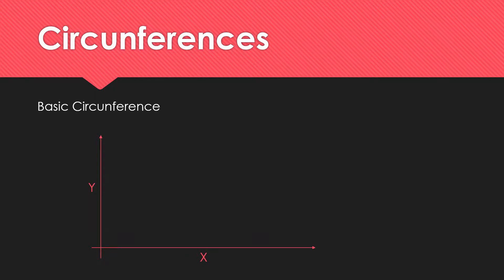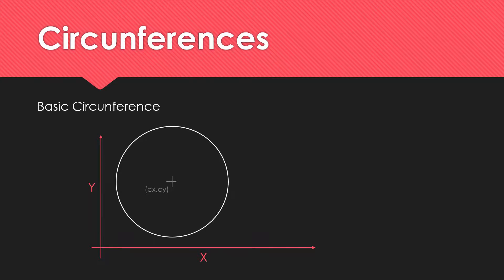So basically the understanding of circumferences: I have an X and Y axis on the Cartesian plane. I need the center — CX and CY — and a radius. To find a point on that circumference, the dot is always one radius of distance from the center, within an angle from the initial radius drawn to the right. That's zero, and you rotate counter-clockwise up to 360 degrees, or 2π in radians.